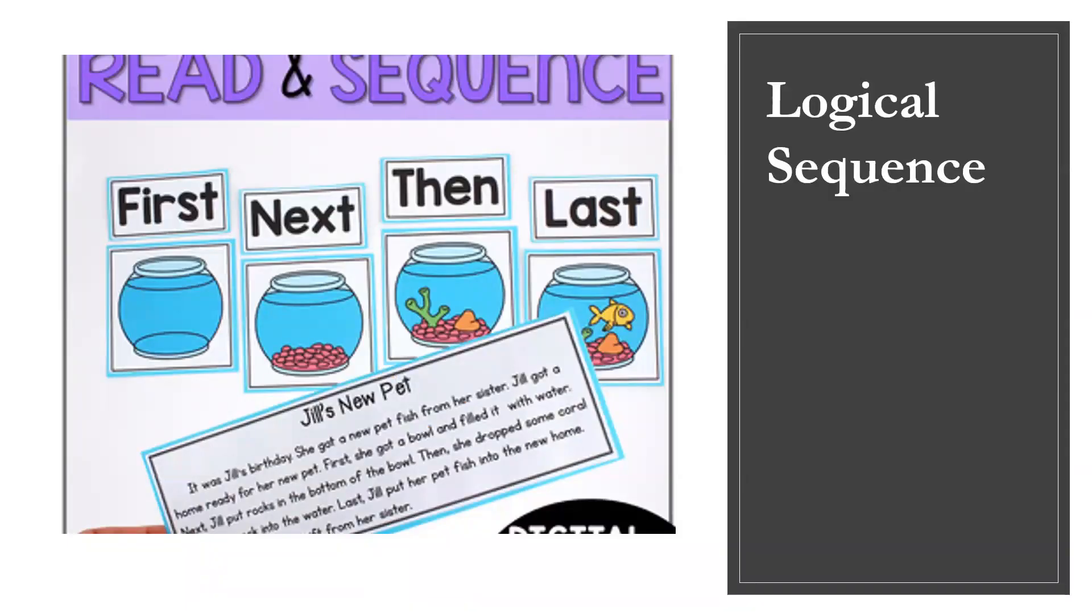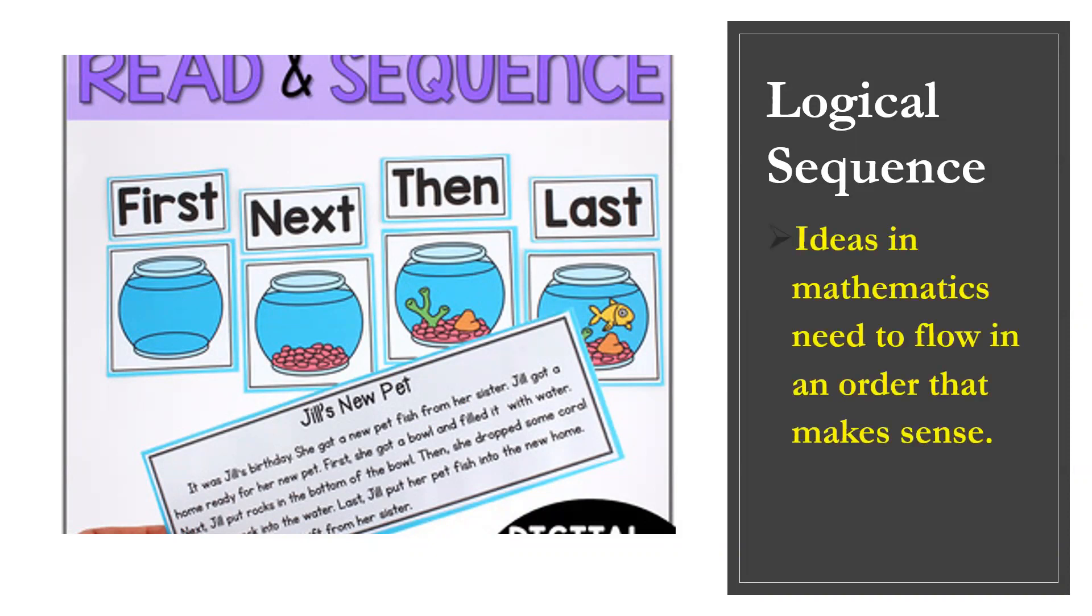Next is the logical sequence. Ideas in mathematics need to flow in an order that makes sense. Mathematics has order, it is not chaos or disorder. It must flow in a logical order, just like setting up an aquarium. What is the first thing that you need to do? Next, then, and the last.